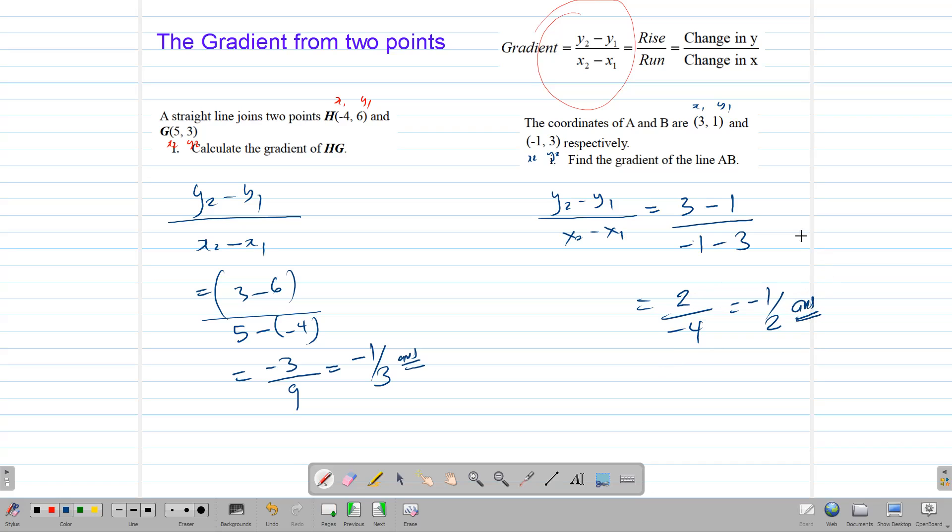So it's very useful to find the gradient given two points. Pretty simple procedure. You label your points, and you substitute the values into the formula, and you do the calculations. And that's pretty much it.